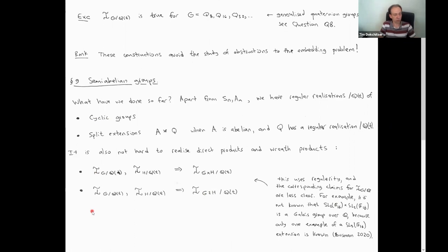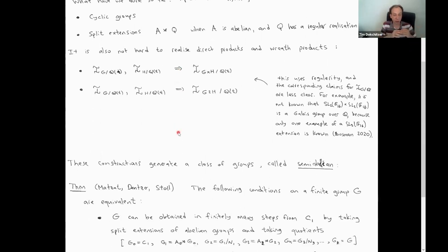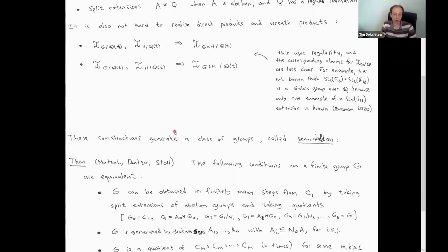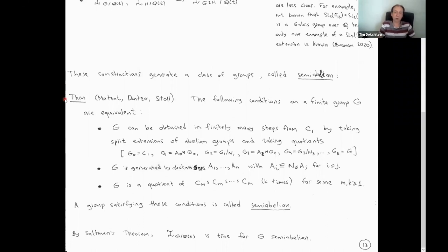So these are the things that we can construct. These constructions generate a class of groups which are called semi-abelian, which are important in the inverse Galois problem for this obvious reason. I don't know if anyone uses this terminology apart from people who work in the inverse Galois problem, but I don't think anyone else uses the word semi-abelian anyway. So I think it's been reserved in that context. A few people looked at it and the terminology was coined by Matzat and Matzat-Stoll, who proved some equivalent conditions for this class.